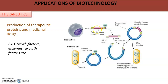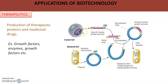Growth hormone is required for normal growth of a child, even during the adolescence period. Lack of growth hormone results in dwarfism. For such people, therapeutic growth hormones are available.